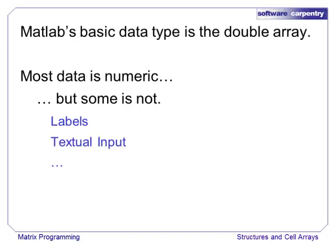In the lectures on arrays, indexing, and linear algebra, we saw that MATLAB's basic data type is an array of double floating point values. A lot of scientific data is reported as numbers, but some data comes in text or other formats.